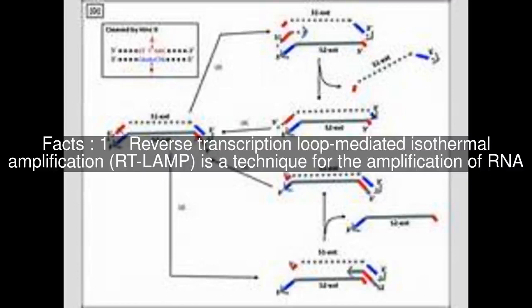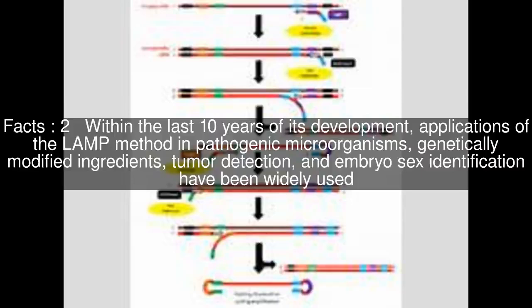Reverse transcription loop-mediated isothermal amplification is a technique for the amplification of RNA. Within the last 10 years of its development, applications of the LAMP method in pathogenic microorganisms, genetically modified ingredients, tumor detection, and embryo sex identification have been widely used.